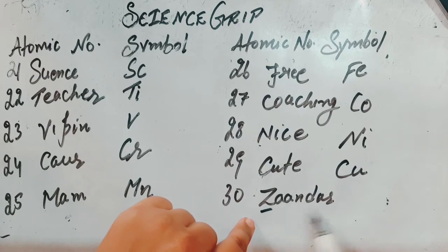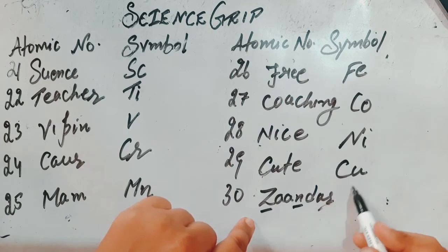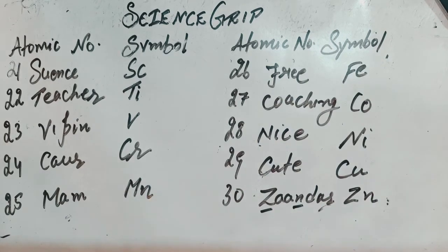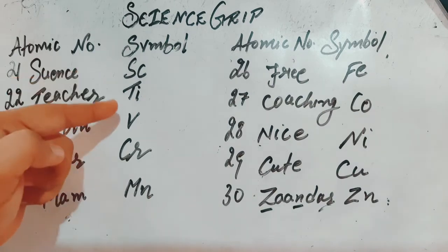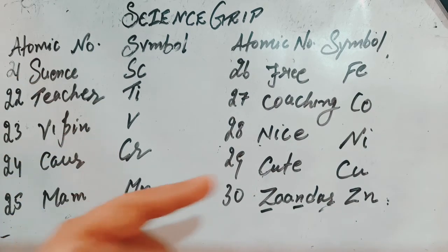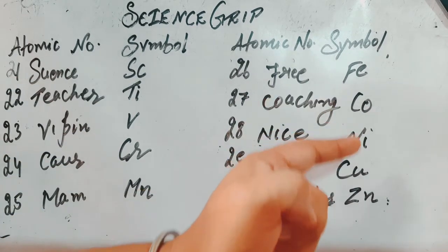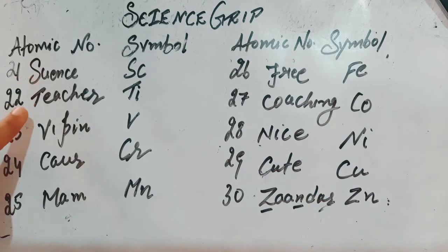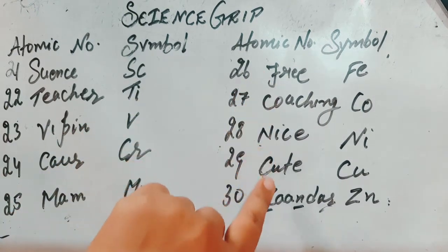'Jandar' — Zn means zinc. So the elements are: scandium, titanium, vanadium, chromium, manganese, iron, cobalt, nickel, copper, and zinc. The sentence is: science teacher weapon car ma'am provides free coaching nice cute and zandar.